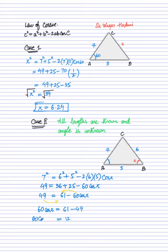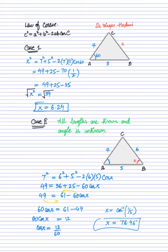Shifting terms: 60 cos X equals 61 minus 49, which is 12. So cos X equals 12 divided by 60, which simplifies to 1/5. After that, you apply the inverse cosine: cos inverse of 1/5 gives approximately 78.46°, and that is your angle. So whenever all three sides are known and the angle is unknown, apply the law of cosines — write the angle on the left, place the opposite side squared on the right, apply the working formula, solve, and finally take the inverse cosine to find the angle.